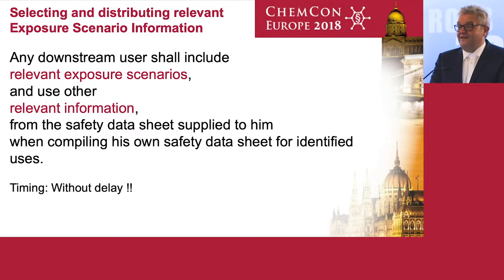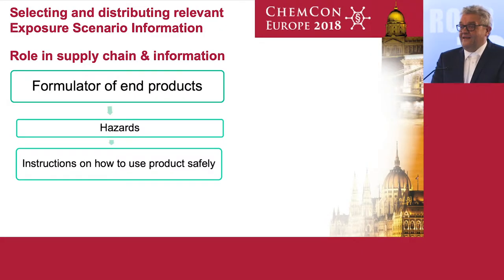But if you have new information on risk management measures that need to be applied, you need to inform your downstream users as soon as possible. He needs to know what the hazards of your products are, because then he knows why he needs all those risk management measures you are communicating to him. And they need an instruction on how to use a product safely.